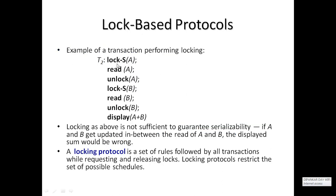For example, suppose transaction A acquires a shared lock, reads the data item, then unlocks. Transaction B performs a read with a shared lock and then unlocks. A and B display a compatible locking scenario. However, locking as above is not sufficient to guarantee correctness — if A and B get updated between the reads, the displayed sum would be wrong.